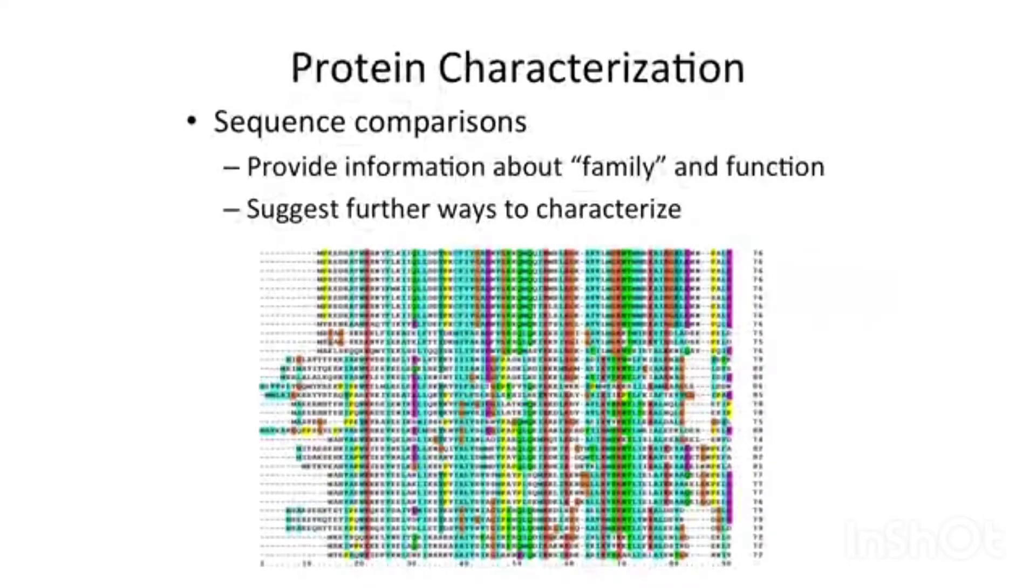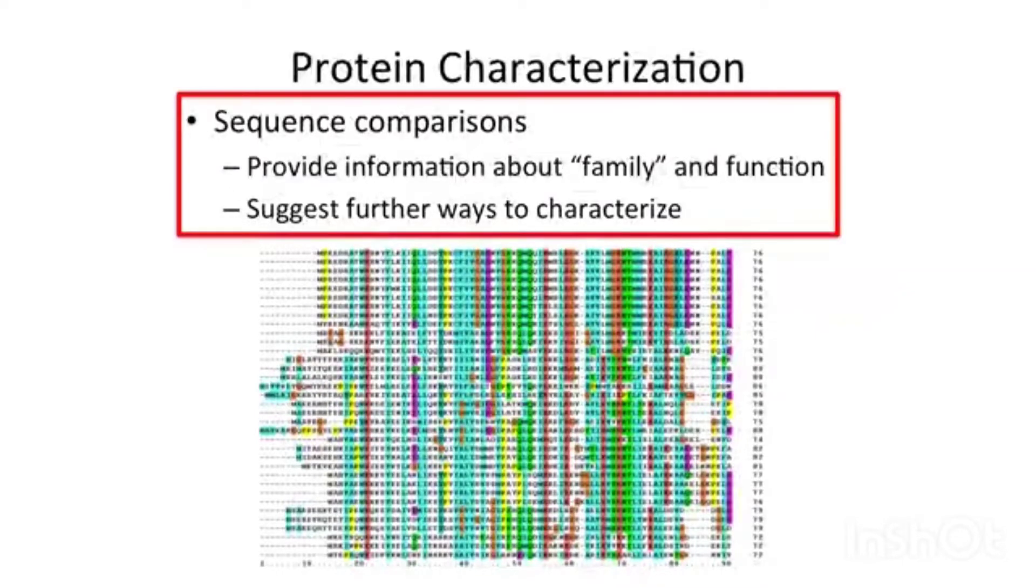Once a protein has been purified, the next step is to characterize it. One of the easiest ways to characterize a protein is to determine its sequence using DNA sequence. DNA encodes proteins, and by knowing the DNA sequence, you can deduce the sequence of amino acids.